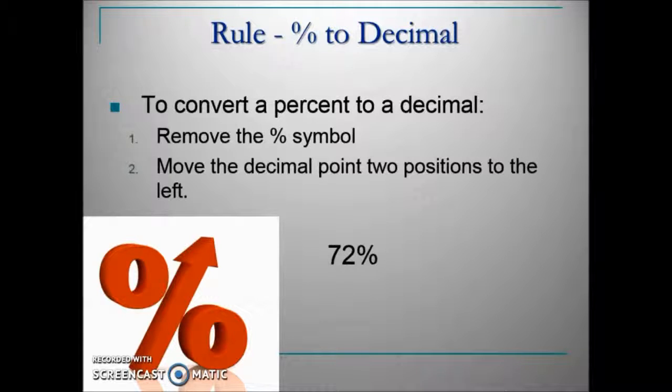Seventy-two percent, changing it to a decimal, we'll first remove the percent sign. Next, we'll move the decimal point, which would be to the right of the two, two places to the left, so that we have an equivalent .72. Seventy-two hundredths is equivalent to the 72%.